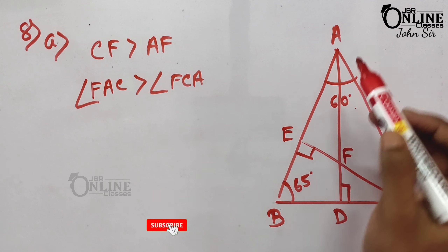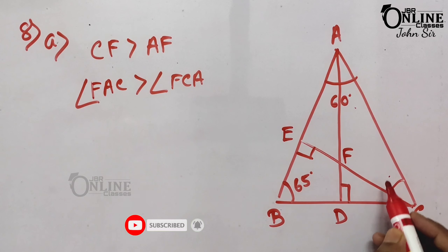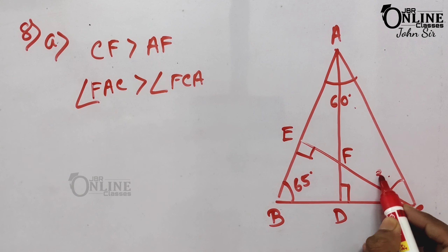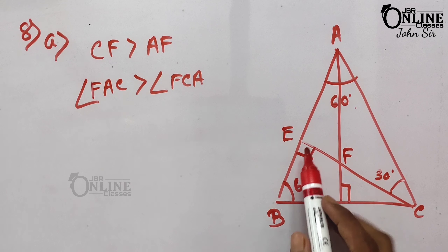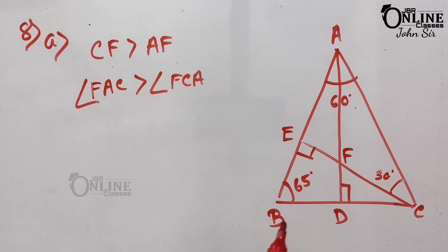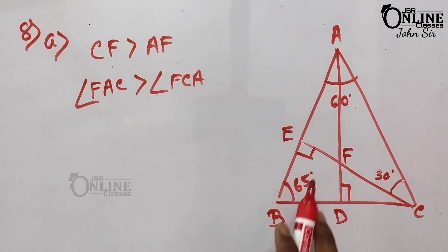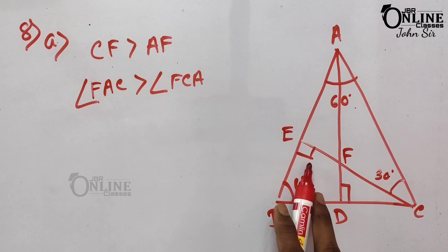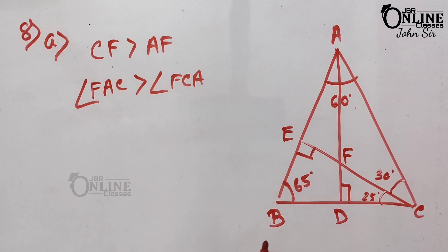To find these angles: in triangle AEC, angle AE = 90° and one angle = 60°, so the third angle = 30° (since 90 + 60 = 150, leaving 30°). Similarly, in triangle BEC, one angle = 90° and another = 65°, so the third angle = 25°.